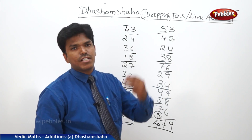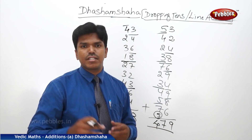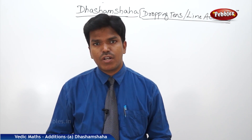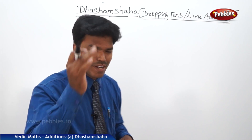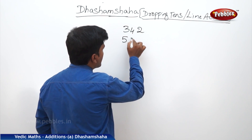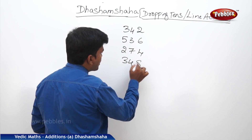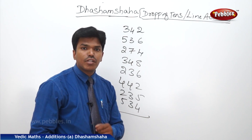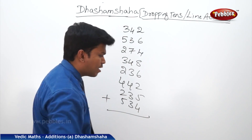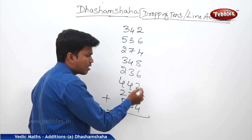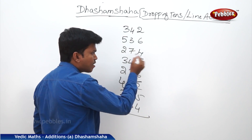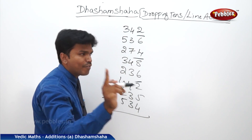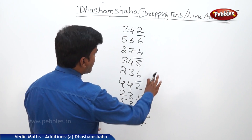Now let us take the last examples for 3 or 4 digit numbers in a line. First, a 3-digit example: 342, 536, 274, 348, 236, 442, 235, 534. Now let us add these numbers the same way — start from the rightmost column at the bottom. 4 plus 5 is 9, 9 plus 2 is 11 — more than 10, remaining 1. 1 plus 6 is 7, then 7, 8, 5 — remaining 5. 5, 4, 9, 9, 6 — remaining 5. 5, 2, 7. Count tens: 3 at a time. Carry 3 to the next line.